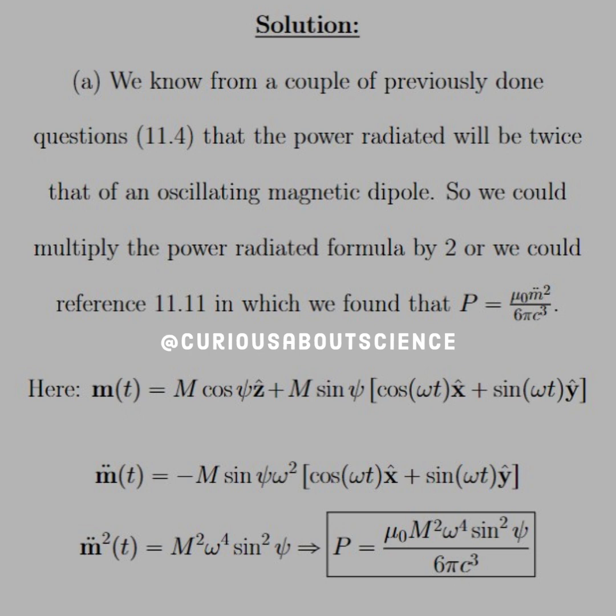which we found that power was equal to mu naught M double dot squared over 6 pi C cubed. Well, in that particular setup, we had that shifted and rotating dipole, and that's what we have here.